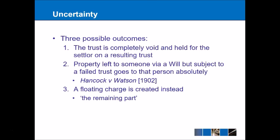What happens when there is uncertainty as to subject matter? There are three possible outcomes. First, the trust becomes void and the property is held on resulting trust, reverting back to the original owner. But if the original owner is dead — as in a will — we often apply the rule in Hancock v Watson 1902, where property left under a will but subject to a failed trust simply goes to the intended person, skipping the trust element entirely.